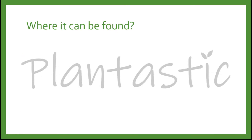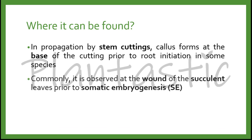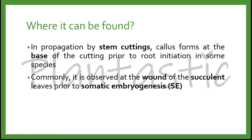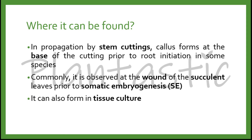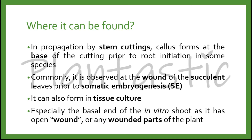Where can it be found? In micropropagation by stem cuttings, callous is formed at the base of the cutting prior to root initiation in some species. Commonly, it is observed at the wound of succulent leaves prior to somatic embryogenesis in nature. It can also be formed in plant tissue culture, especially at the basal end of the in vitro shoot, as it has an open wound or any wounded part of the plant.